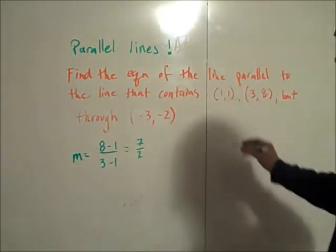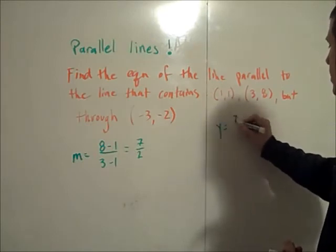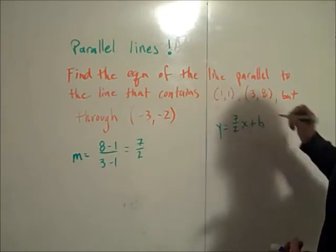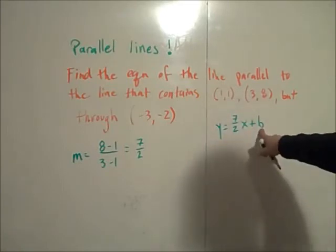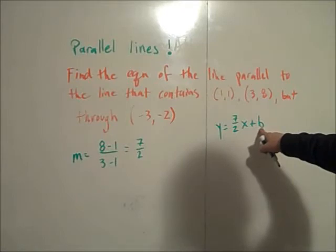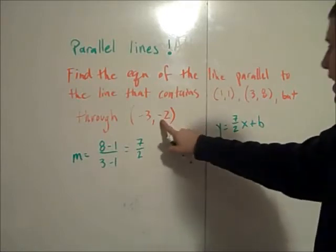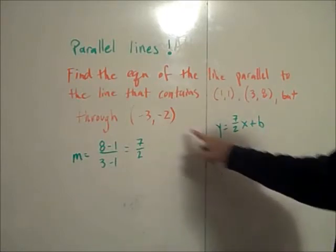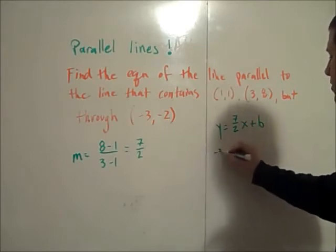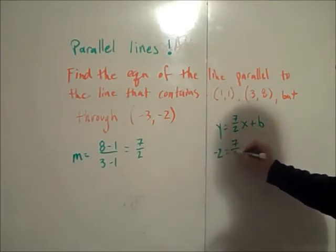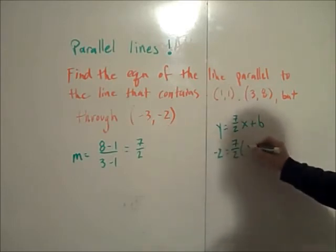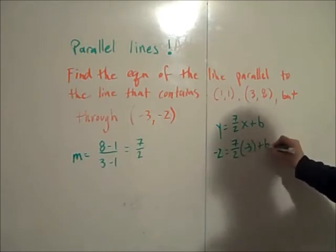So I know that my line is going to be y equals 7/2x plus something I don't know but we're going to find out. I'm going to find b right now by plugging in -2 for y and -3 for x. So I have -2 equals 7/2 times -3 plus b.